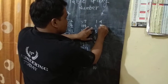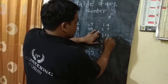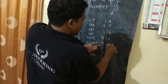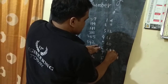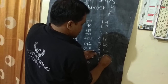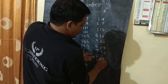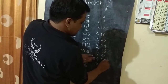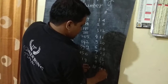And write the table of 4: 4 twos are 8, 4 threes are 12, 4 fours are 16, 4 fives are 20, 4 sixes are 24, 4 sevens are 28, 4 eights are 32, 4 nines are 36, 4 tens are 40.